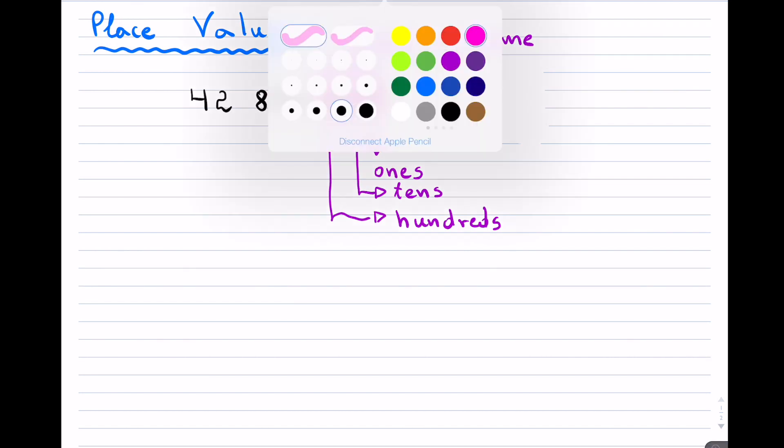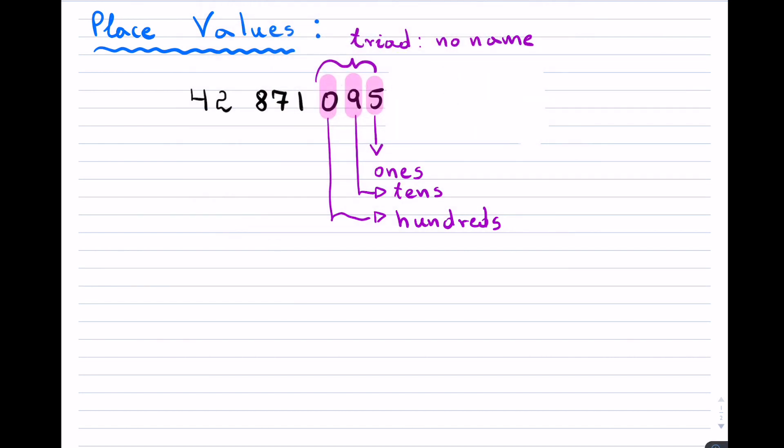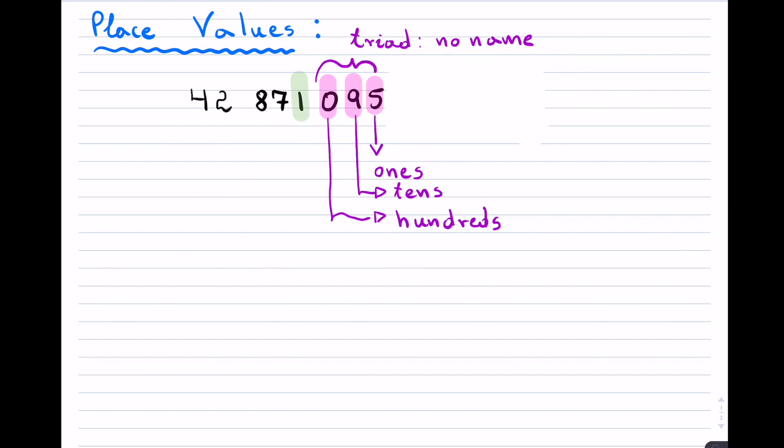The second triad, which I will highlight in a different shade, starting with the 1, so that place value is known as the thousands.